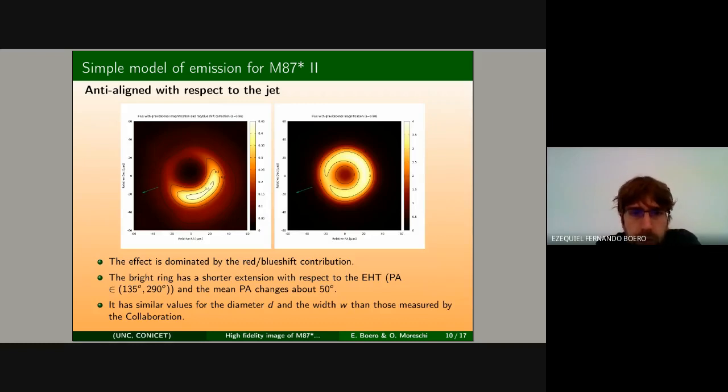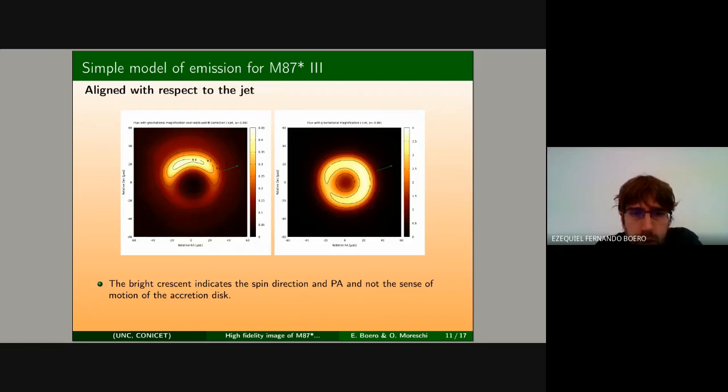If we change the tilt or the orientation of the spin of the black hole, this case is the aligned one, we notice that the bright sector now appears at the north location. So the bright crescent shape that we see is a robust indication of the spin direction and the position angle. And one can see also that they do not depend essentially on the sense of rotation of the plasma in the midplane.